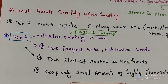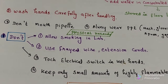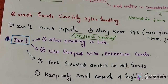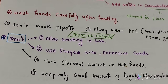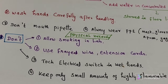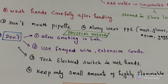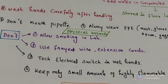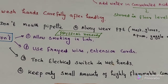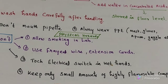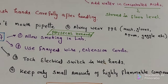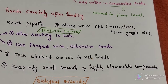Precautions against physical hazards: do not allow smoking in the laboratory. Do not use frayed wire or extension cords. Do not touch electrical switches with wet hands. Keep only small amounts of highly flammable chemicals, to prevent fire hazards in the laboratory.